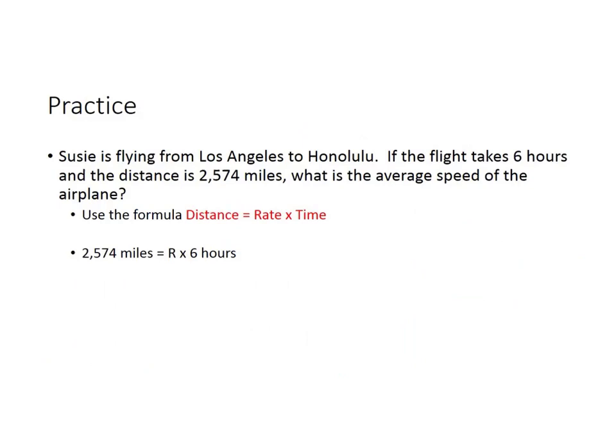So let's try and practice this. Susie is flying from Los Angeles to Honolulu. Lucky Susie. If the flight takes six hours and the distance is 2,574 miles, what is the average speed of the airplane? Well, again we have our formula: distance equals rate times time. Now if you plug in the information we know, the distance is 2,574 miles. The time is six hours. What we don't know in this case is the rate, or how fast the plane is going. That's what we need to solve for. That's our variable.